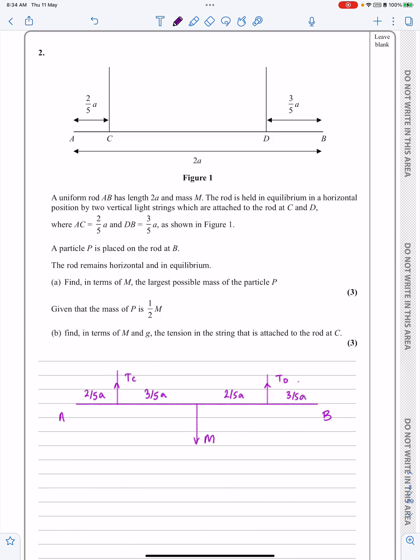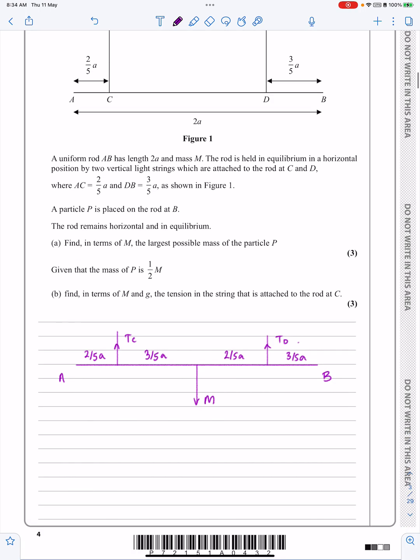So that's our setup. And it says a particle P is placed on the rod at B. So I've got some particle P, which is placed on the rod there. And I'm going to say the weight acting down is Mg there. And the weight acting down is Pg there.